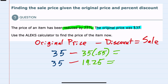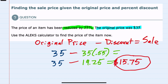So the original price, $35, minus that $19.25, leaves us the new sale price of $15.75 as the price for the item now.